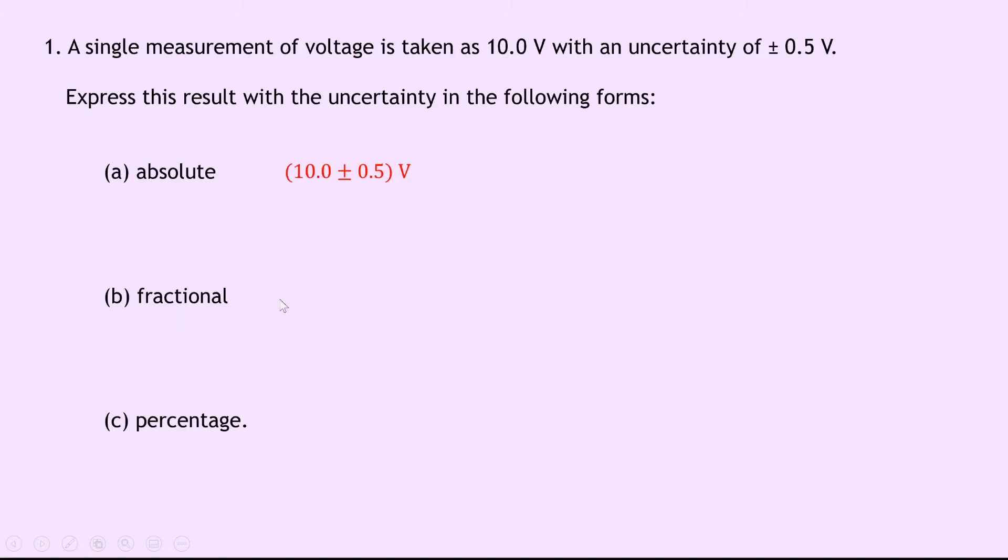Part B in fractional form, remember the relationship for the fractional uncertainty is equal to the absolute uncertainty divided by the measurement. So all we do is we take the 0.5 and we divide it by the 10.0, and we end up with plus or minus 0.05. Notice there's no units here because it's just a fraction, it's not actually in volts.